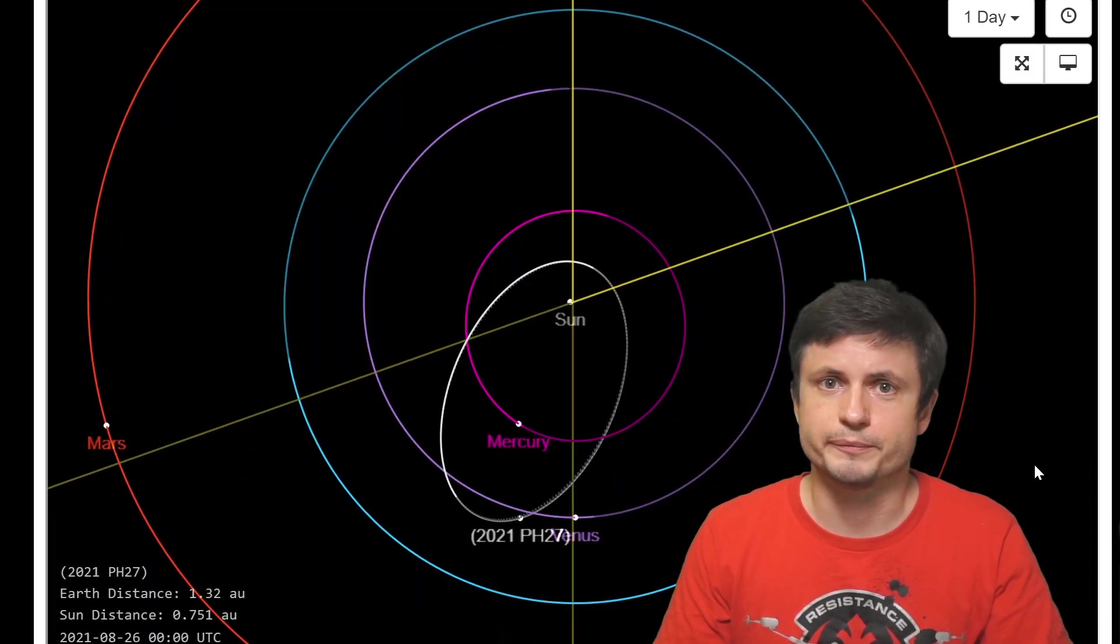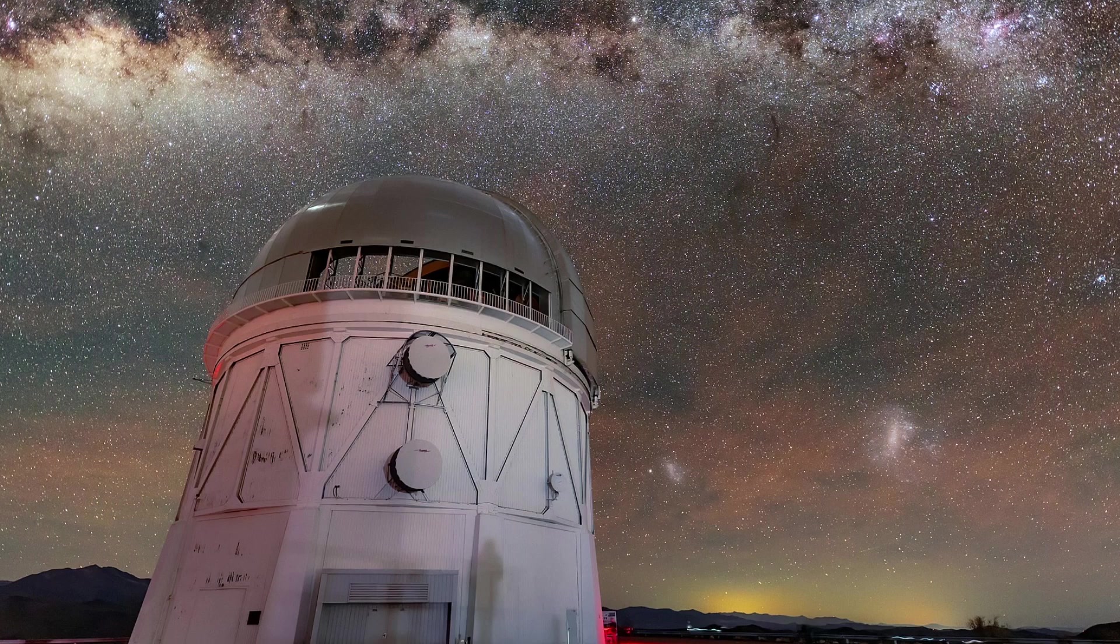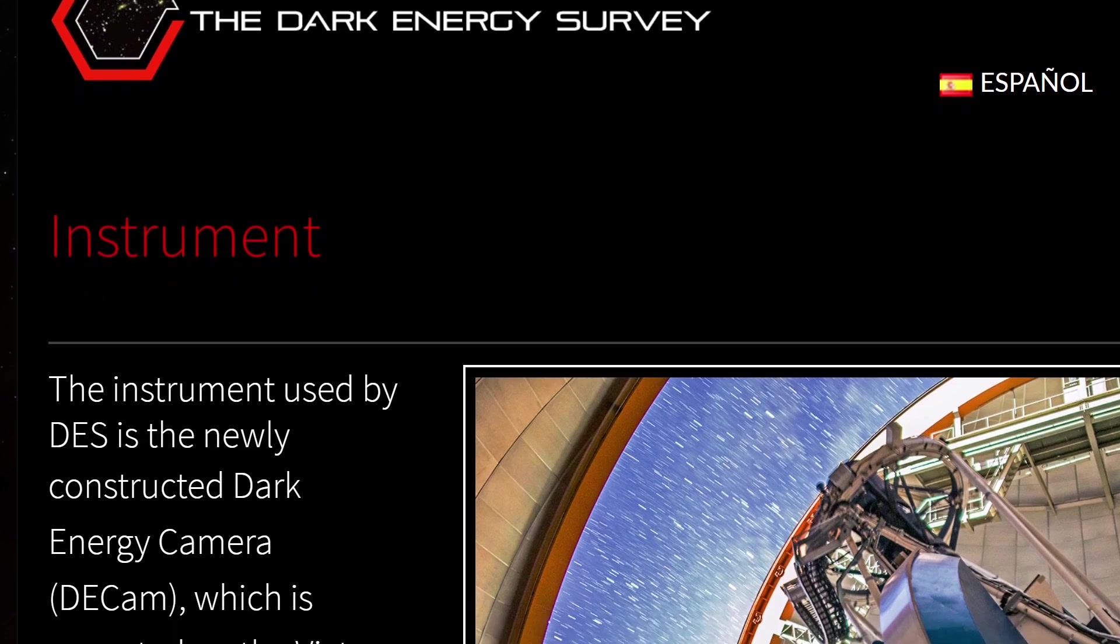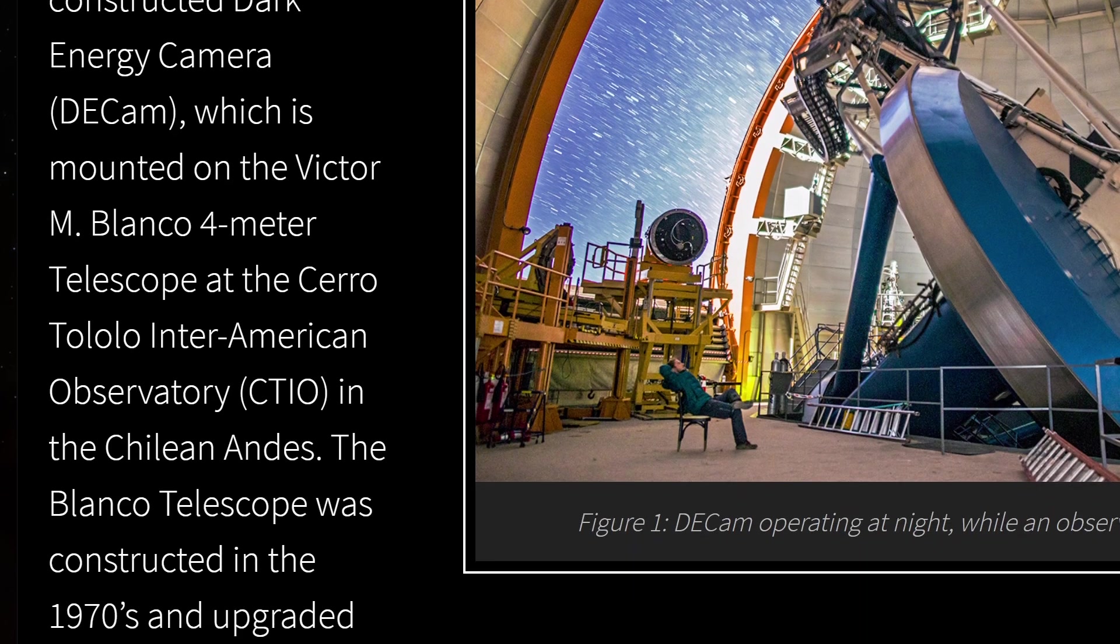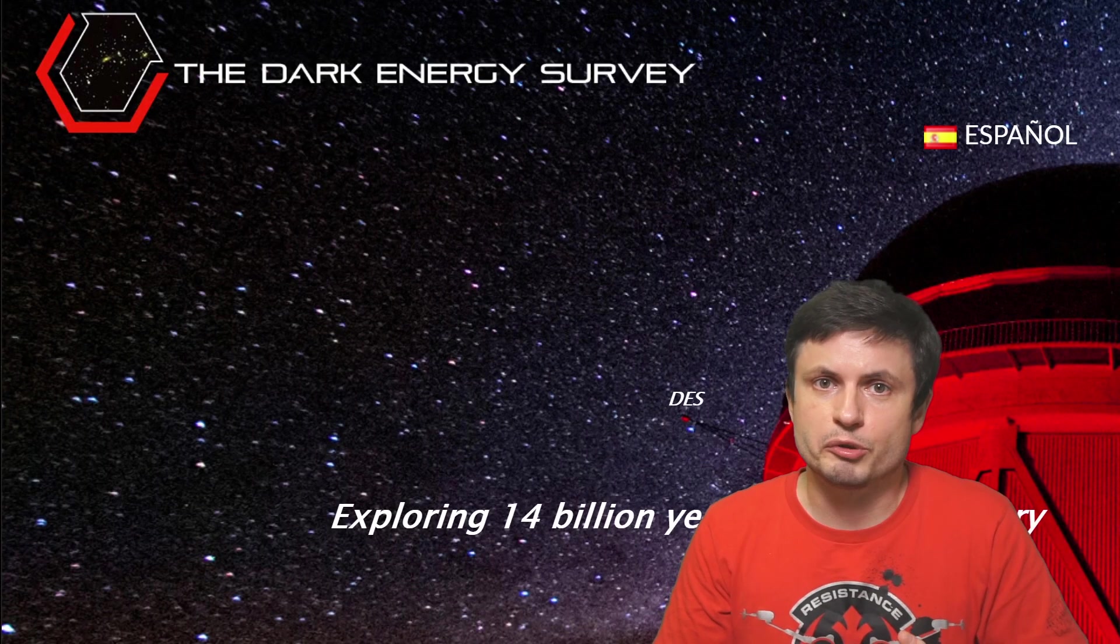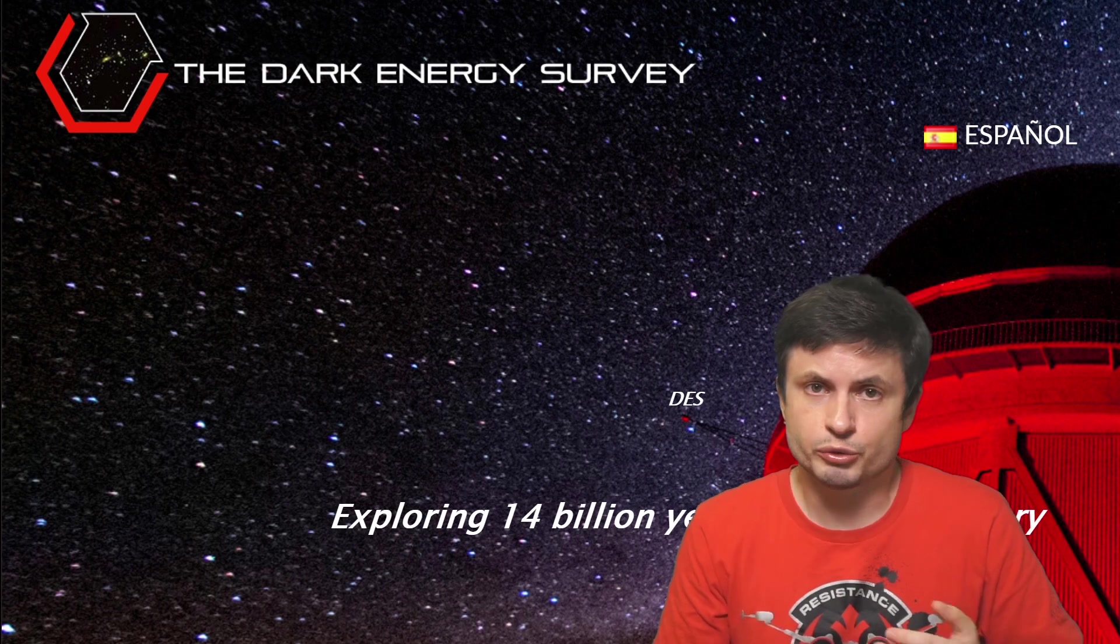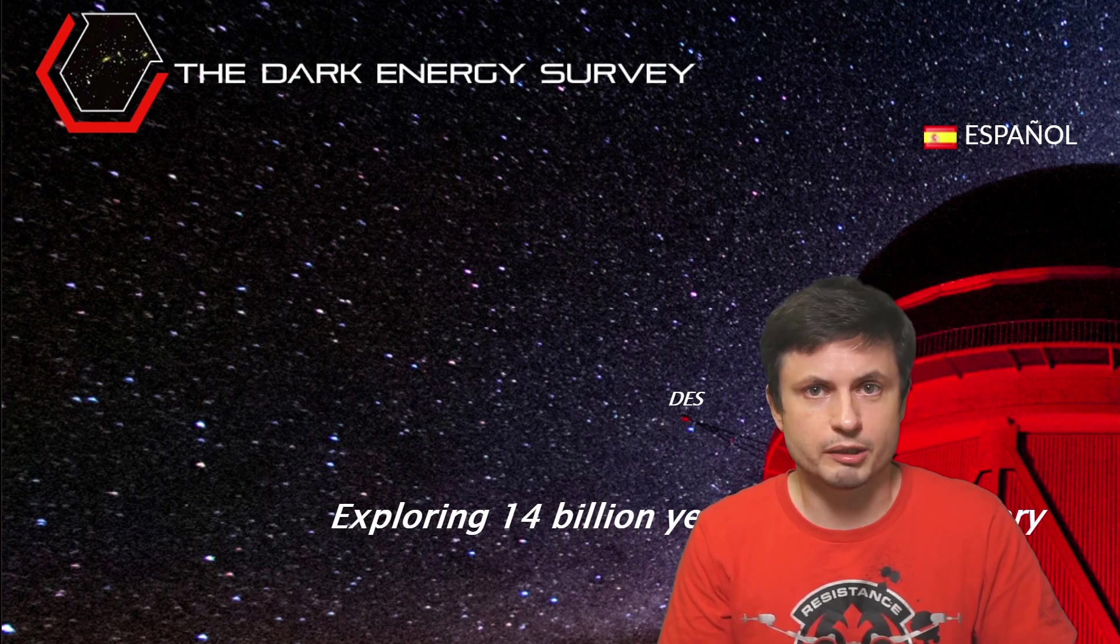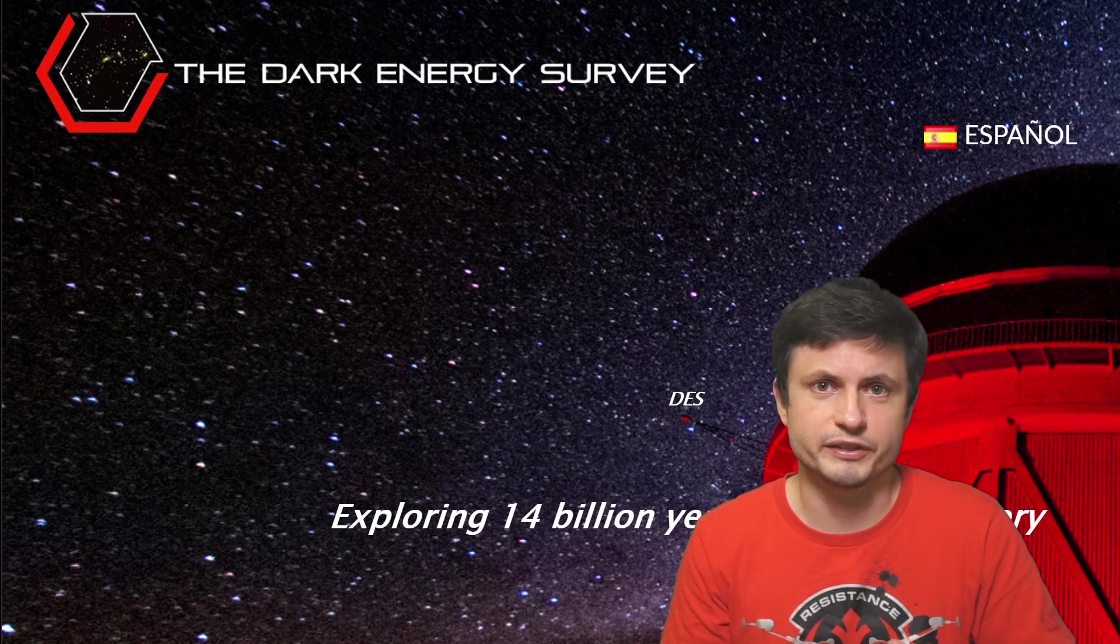But first of all, how exactly was this found? This beautiful observatory in Chile, known as CTIO, or Cerro Tololo Inter-American Observatory, is part of the Dark Energy Survey that contains what's known as the DECAM, also known as Dark Energy Camera. And even though the main purpose of the survey is to study the mystery of dark energy, it's already been able to discover some incredible objects out there completely by accident, with this recent asteroid being one of these objects.